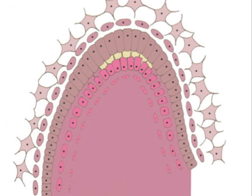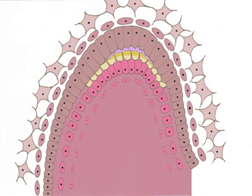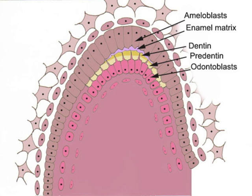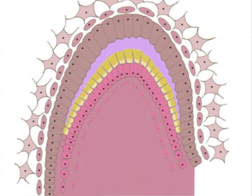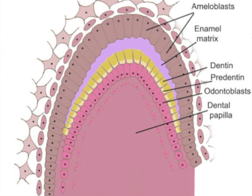Next, the pre-ameloblasts elongate to become ameloblasts with polarized nuclei. The basement membrane is resorbed and ameloblasts deposit enamel matrix adherent to the dentin. The ameloblasts and odontoblasts move in opposite directions. Soon after the matrices are deposited, mineralization is initiated with the deposition of hydroxyapatite crystals in both the dentin and the enamel.